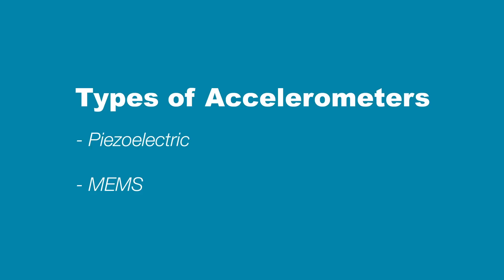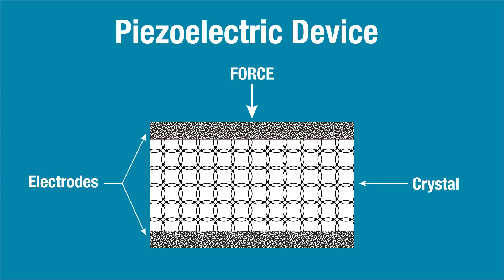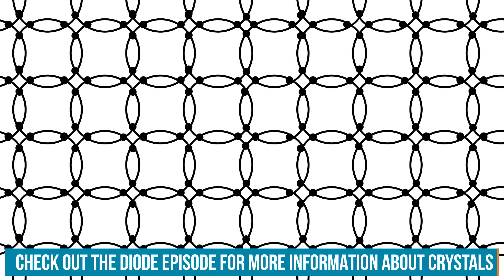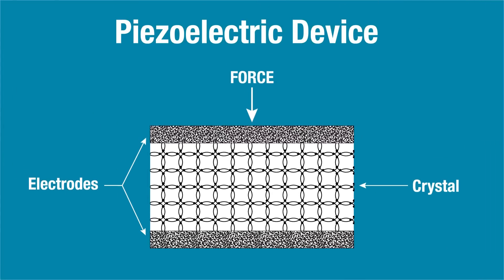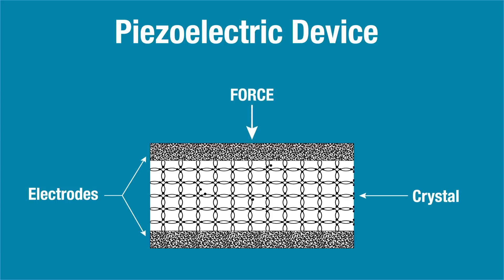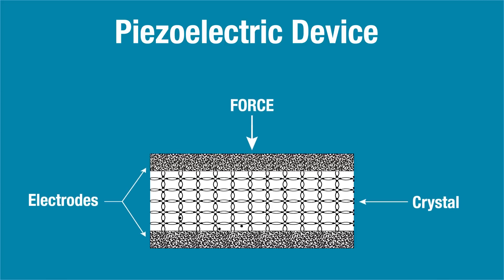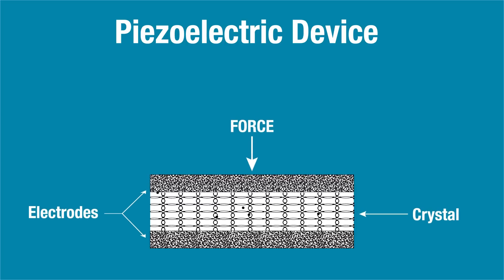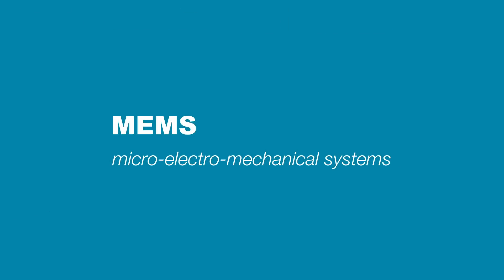So how do accelerometers detect G-force? The types you will typically come across are either piezoelectric or MEMS. Piezoelectric accelerometers work by a bit of science witchery: this type has a crystal layer sandwiched between two electrodes. The crystal is a structure made of positive and negative ions. When force is applied, the structure distorts, the electrons of those ions shift around, which generates an electric charge. That charge is proportional to the force being applied, so we can use it to measure acceleration.